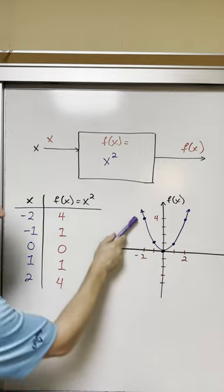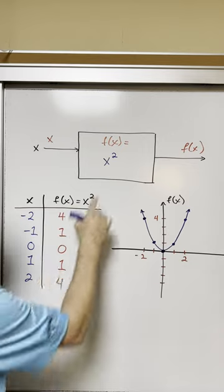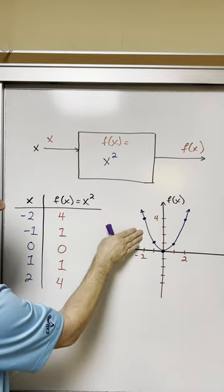And in this case, when we plot the function, we get a totally different curved shape and this is called a parabola. Any function with x squared will form some sort of parabola.